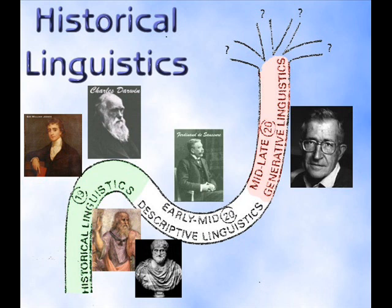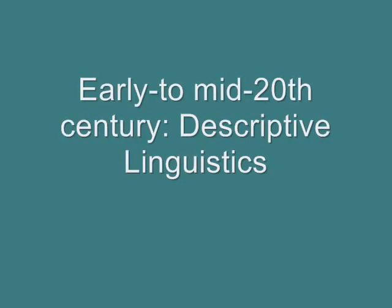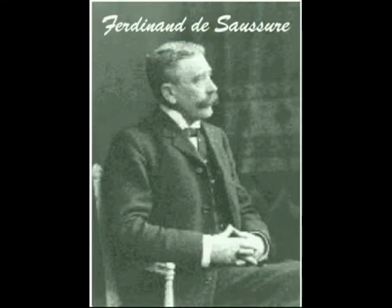In the 20th century, the emphasis shifted from language change to language description. Instead of looking at how a selection of items changed in a number of different languages, linguists began to concentrate on describing single languages at one particular point in time. If any one person can be held responsible for this change of emphasis, it was the Swiss scholar Ferdinand de Saussure, who is sometimes labeled the father of modern linguistics.